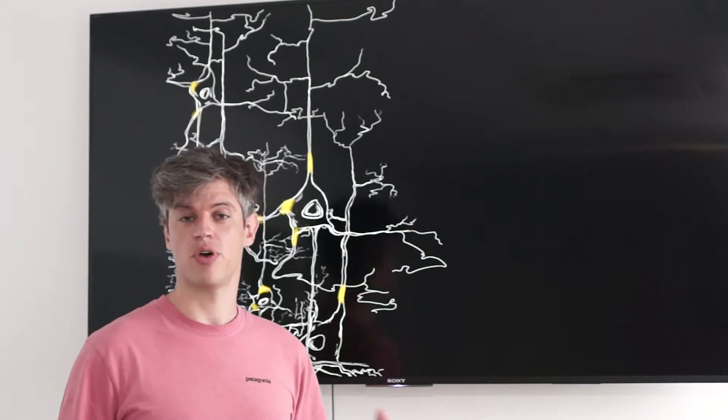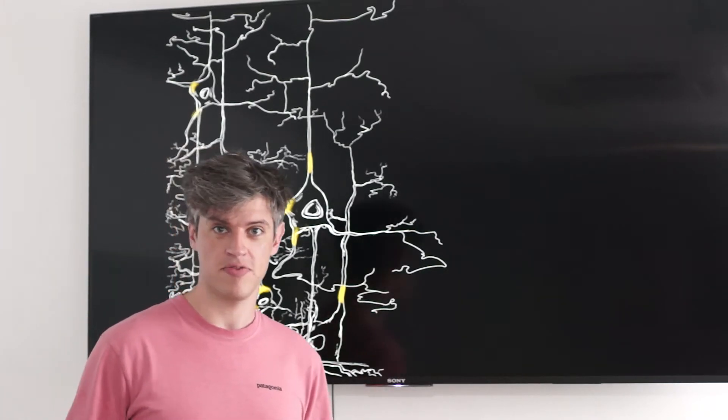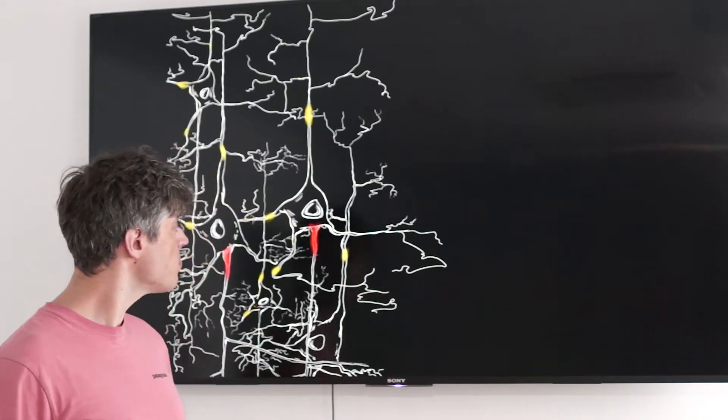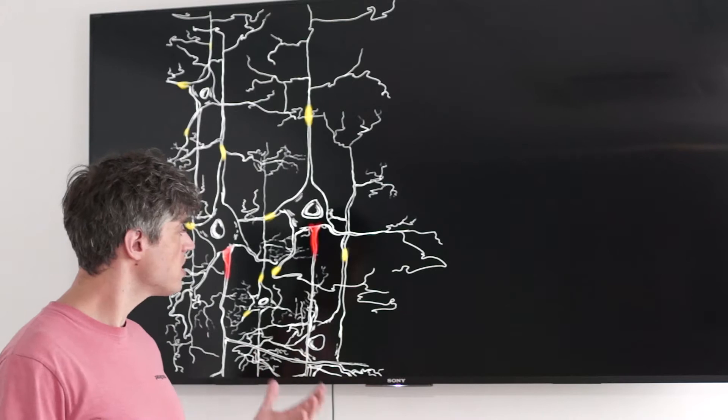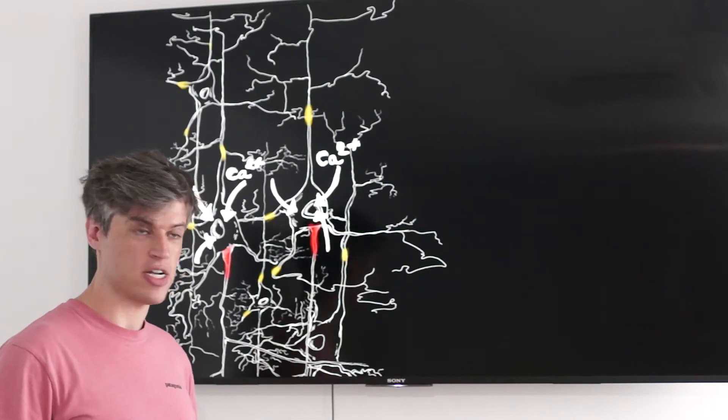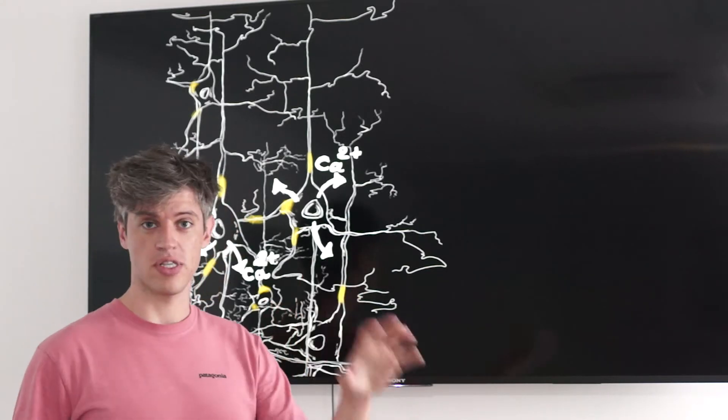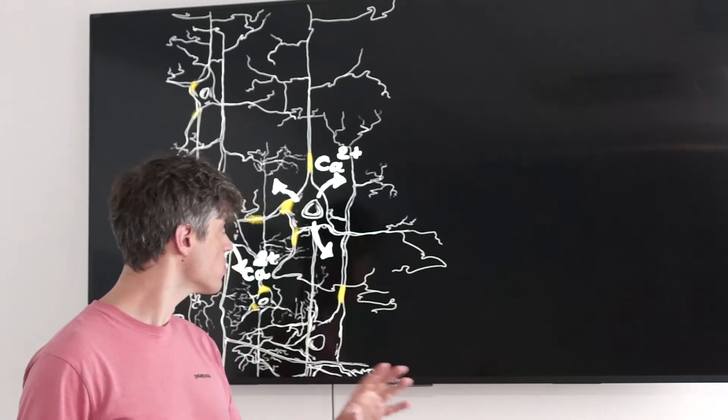What we do in the lab is we try to observe this neuronal activity. For that, we use something called calcium imaging. Calcium imaging is based on the fact that, once activated, a neuron will have an influx of calcium. Once it inactivates, then they will have an outflux of calcium.